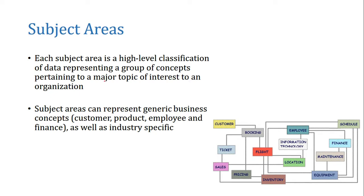Each subject area is a high-level classification of data representing a group of concepts pertaining to a major topic of interest to an organization. Looking at this image for a case of airline ticket booking, you can see concepts in boxes: customer, booking, employee, schedule, ticket, flight, information technology, finance, sales, pricing, inventory, location, maintenance, and equipment — 14 categories in total. This is a typical example of how a subject area looks for an airline business.